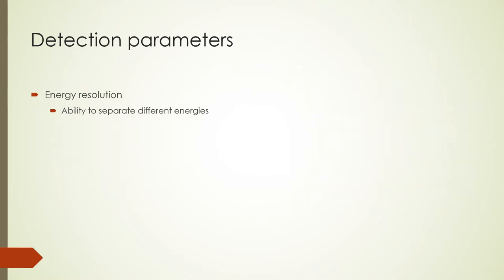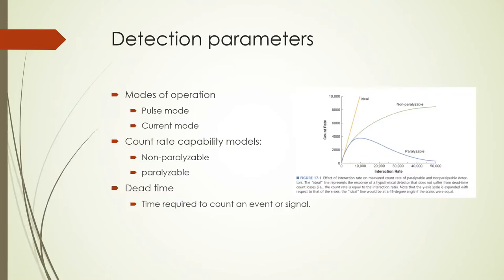Energy resolution is the ability to separate different energies from each other. When counting radionuclide decays, the photon or particle radiations from different radionuclides can have different energies. The ability to detect these energies and display them is what a spectrometer does. Detectors may be operated in pulse mode or current mode. In pulse mode, each signal is treated individually, while in current mode, signals are averaged and treated as a current. Dead time is the time required to count an event or signal. During the dead time, other pulses are not counted.